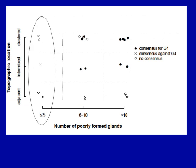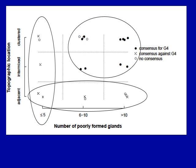When you have five or fewer poorly formed glands, experts typically do not consider that as evidence of pattern 4 — there was uniform consensus against pattern 4. Similarly, when poorly formed glands are immediately adjacent to well-formed glands, there was uniform consensus against pattern 4. Experts considered the poorly formed gland pattern 4 criteria only when you have six or more poorly formed glands seen in a cluster pattern, as shown in this illustration.